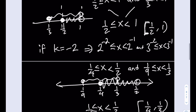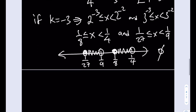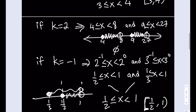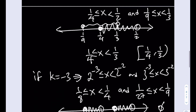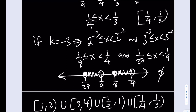So we have four solution pieces total. Putting them all together, our solution set is the union: [1, 2) union [3, 4) union [1/2, 1) union [1/4, 1/3). These are all half-closed intervals. I hope you enjoyed the video — thank you for watching, please comment, like, and subscribe, and see you in the next video. Bye-bye.